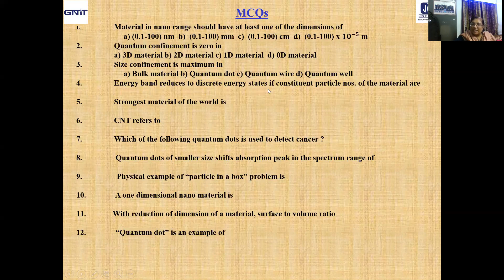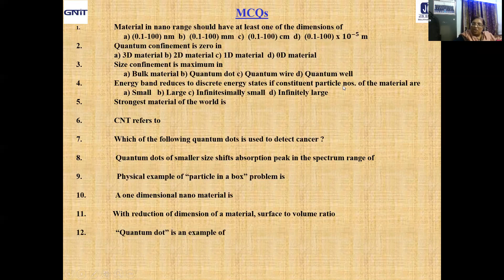Question 4: Energy band reduces to discrete energy states when constituent particle numbers are — (A) small, (B) large, (C) infinitesimally small, (D) infinitesimally large? Answer: Infinitesimally small — when particle number is very small like individual atoms or molecules. Question 5: The strongest material in the world is — carbon steel, graphene, steel, or alnico? Answer: Graphene.